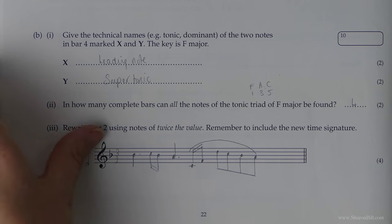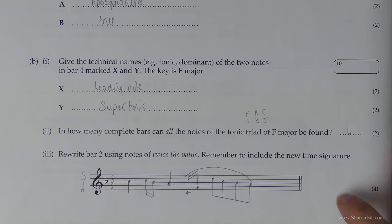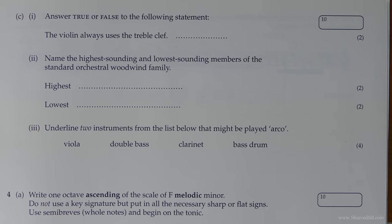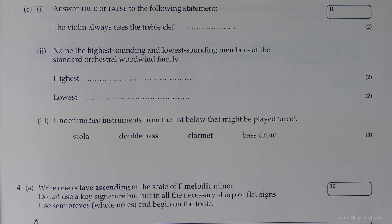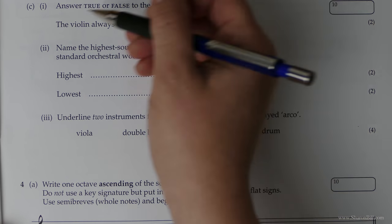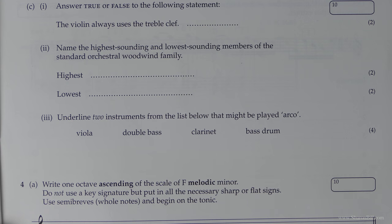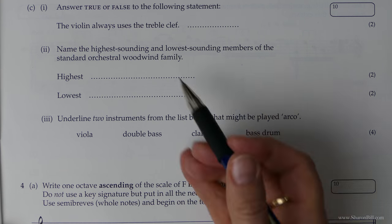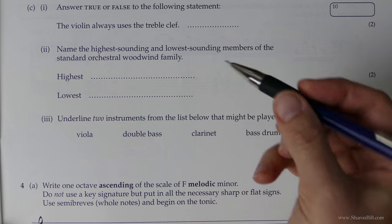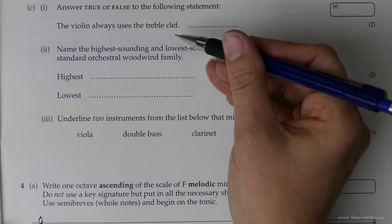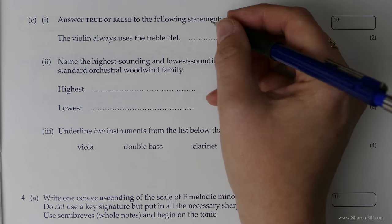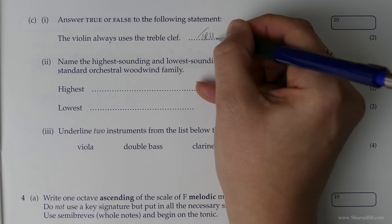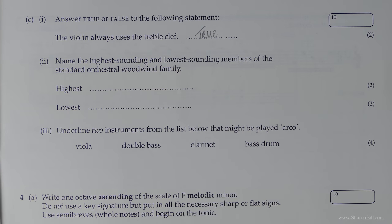So let's just look over the page here at this next question. So page 23. Just some general questions. We'll look at this last section. So answer true or false to the following statement. So these are just general questions now. The violin always uses the treble clef. This is true. It's the viola that uses the alto clef.